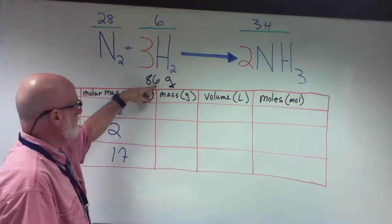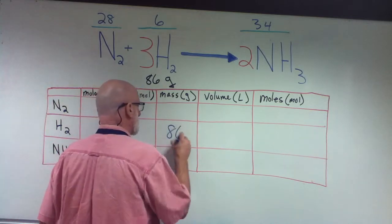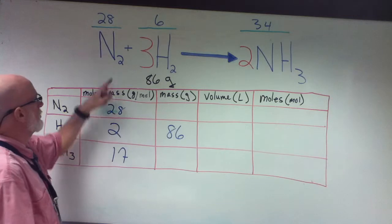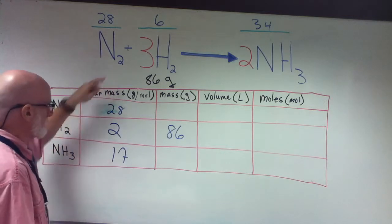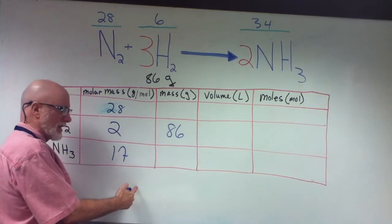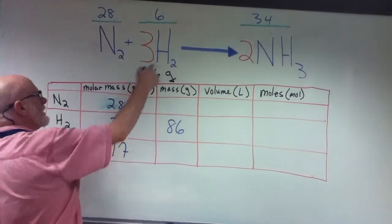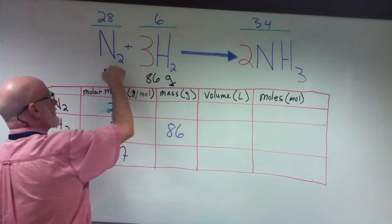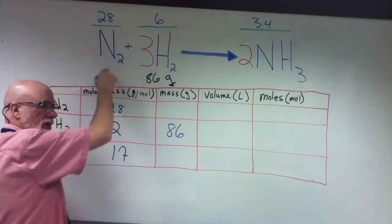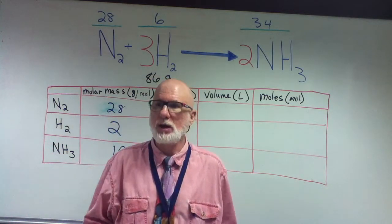Now you've got to do the mass for each one. The mass for this one is easy — it's going to be 86. Now we want to do the mass for this. I'm going to use this space here as my workspace. So it says this compared to this — that's my constant ratio.